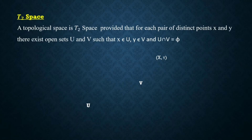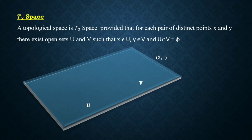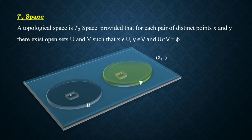The next definition is T₂ space: a topological space is T₂ provided that for each pair of distinct points x and y, there exist open sets U and V such that x belongs to U, y belongs to V, and U intersection V is empty — that is, the two open sets must be disjoint. Suppose the space is a topological space and let x and y be two distinct points; the space is said to be T₂ provided there exist two disjoint open sets U and V such that x belongs to U and y belongs to V.